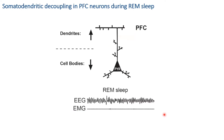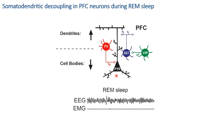To summarize the first part: we found a decoupling between the activity of the cell body and the dendrites of the same neurons selectively during REM sleep, where the dendrites appear subjected to disinhibition while the cell bodies are subjected to inhibition. We then investigated the main inhibitory neurons in the prefrontal cortex to determine whether there is indeed inhibition and disinhibition in parallel during REM sleep.